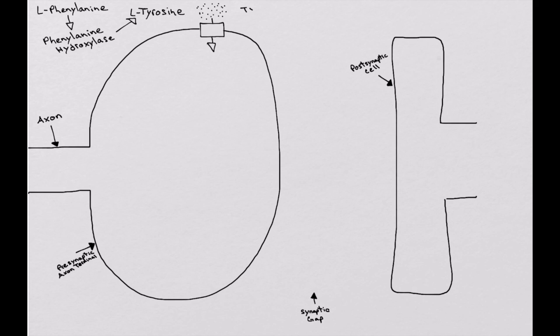Tyrosine makes its way into the cell through a specific tyrosine transporter, which helps bring the tyrosine from the extracellular space into the cytoplasm of the presynaptic terminal.